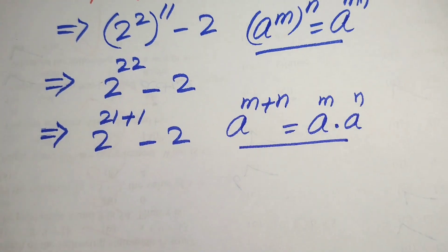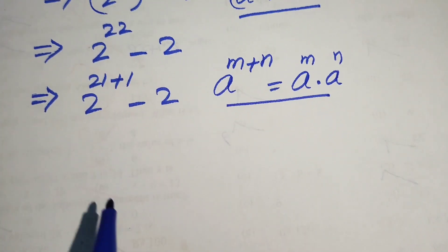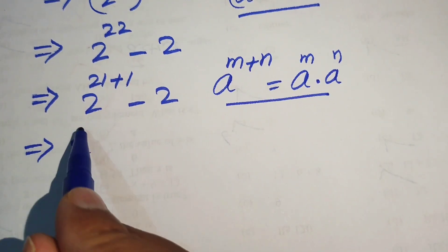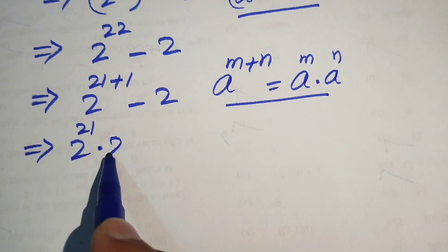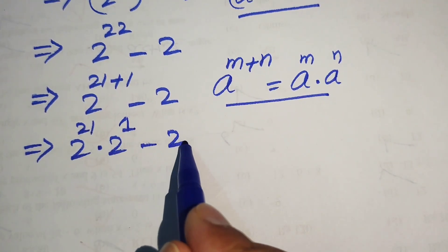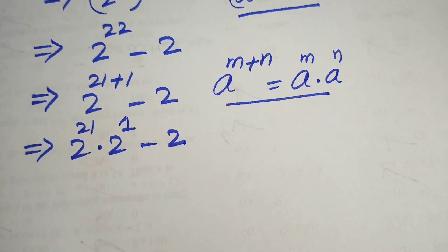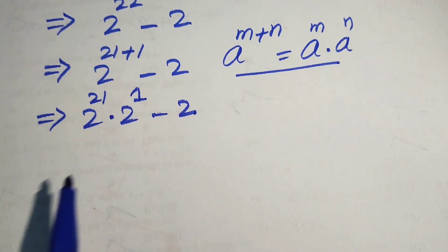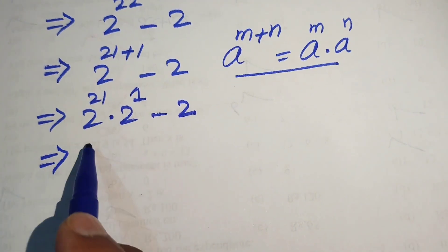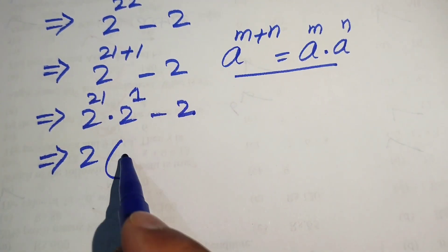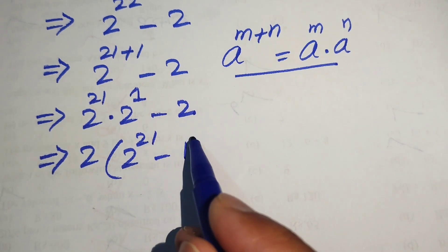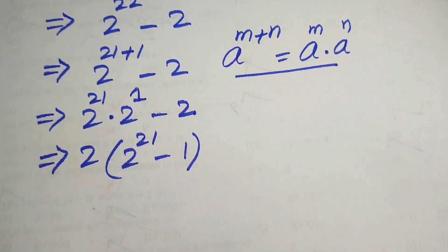According to this exponential law, we write this term as 2 to the power of 21 times 2 to the power of 1, minus 2. We focus on these terms — we see 2 is the common term, so we take out 2 as common, and the remaining terms are 2 to the power of 21 minus 1.